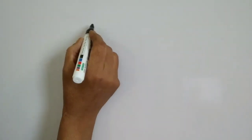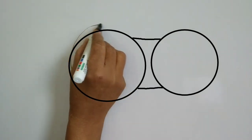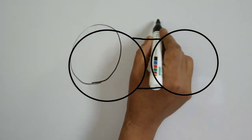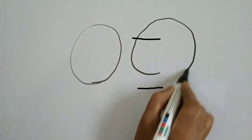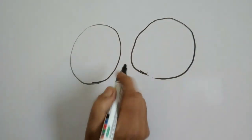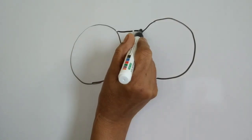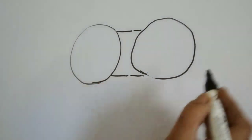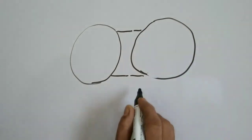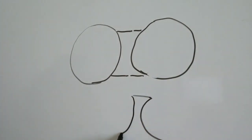How is a concave lens formed? When we take a sphere like this, and another sphere like this, we cut the portions and bind them together. Then you will get the concave lens of this form. This is your concave lens.